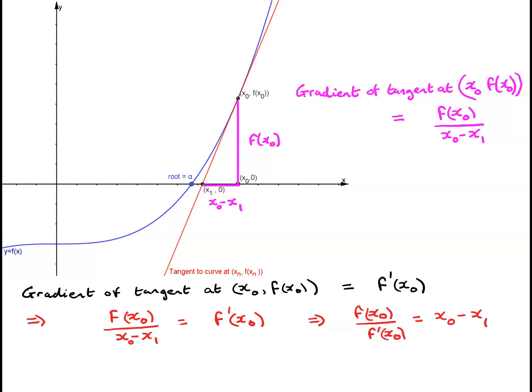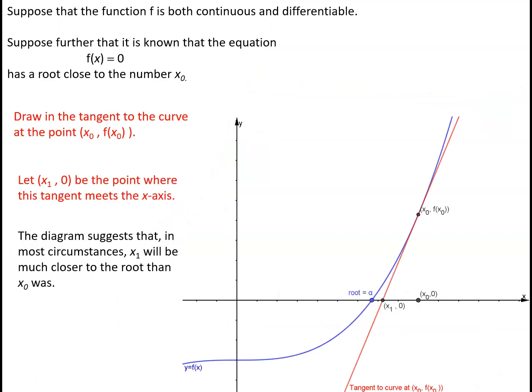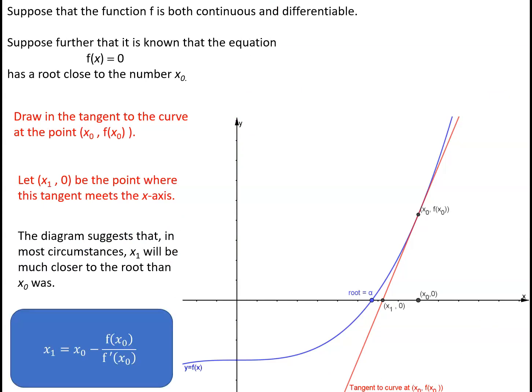Rearranging that equation gives us f(x0) divided by f'(x0) equals x0 minus x1. In other words, making x1 the subject of the formula, we get x1 = x0 minus f(x0) divided by f'(x0). To summarize: if f is a continuous function which can be differentiated, and we know that we have an approximate solution to f(x) = 0 at x0, then we can obtain what will usually be a better approximation by taking x1 = x0 - f(x0)/f'(x0).